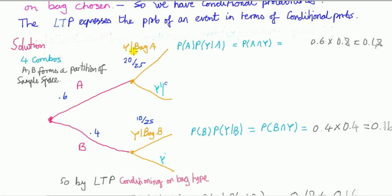Common mistake here—students write 'this is probability of Y.' No, in fact that's the answer we want. This is probability of Y given bag A, a conditional probability. Likewise this is also conditional probability: you've got 10 yellows in bag B, so it's 10 out of 25.